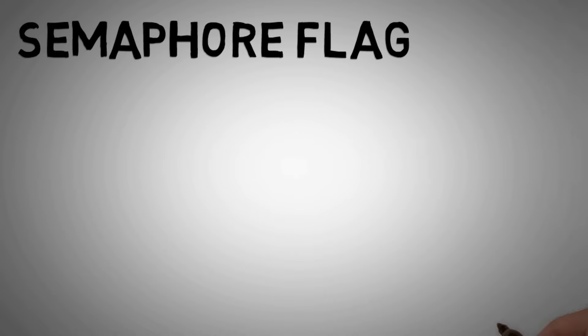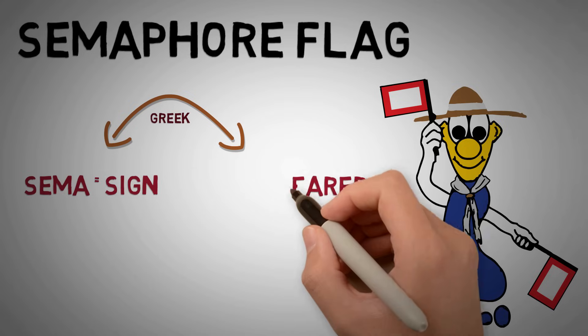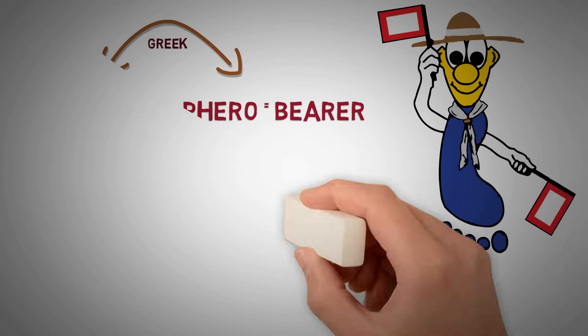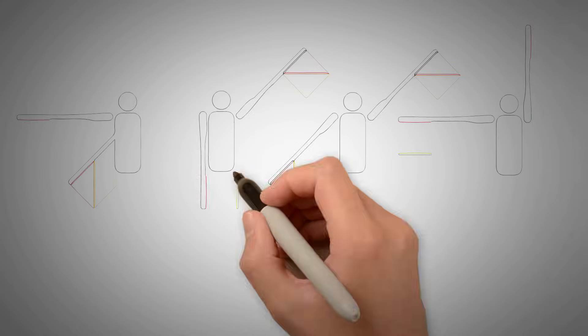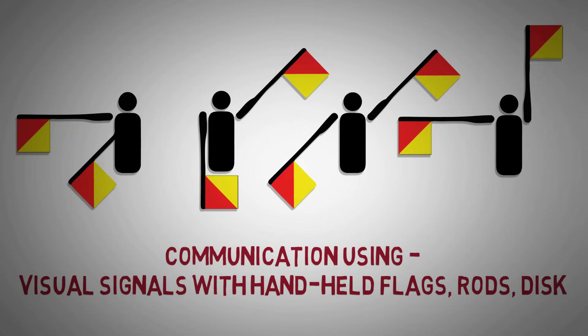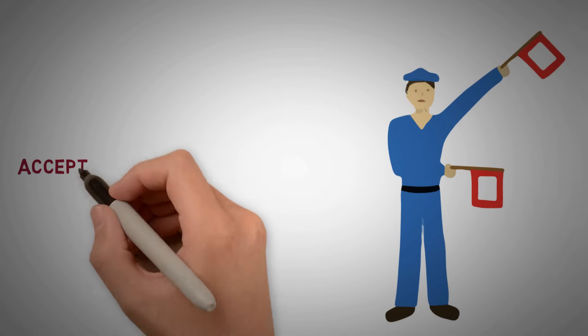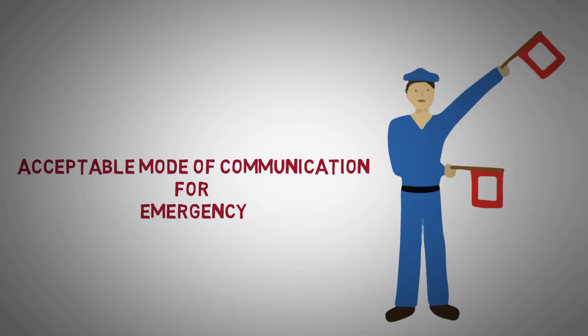Semaphore Flag. Semaphore Flag was used in maritime during the late 19th century. The word semaphore is derived from Greek word sema meaning sign, and pharos meaning bearer. It is the telegraphy system conveying information at a distance by means of visual signals with hand-held flags, rods and disks. It is still used during underway replenishment at sea and is an acceptable mode of communication for emergency.